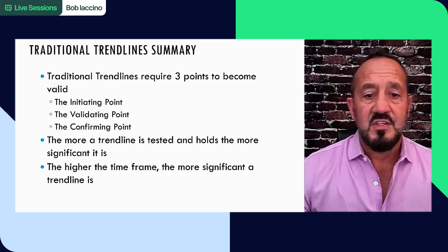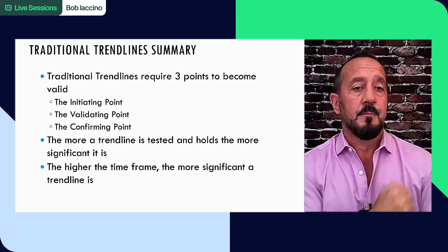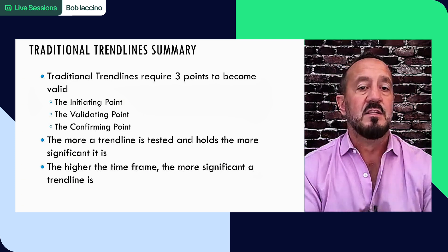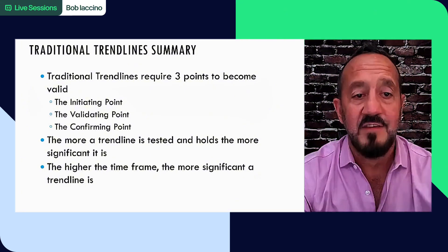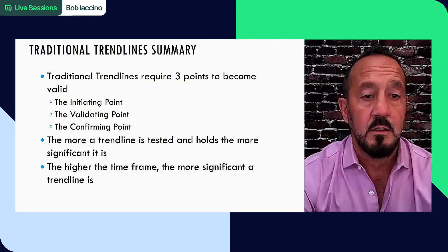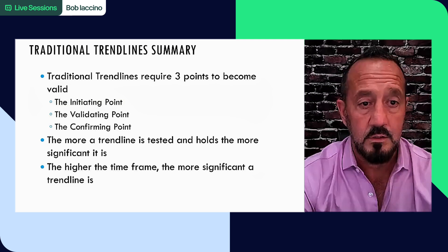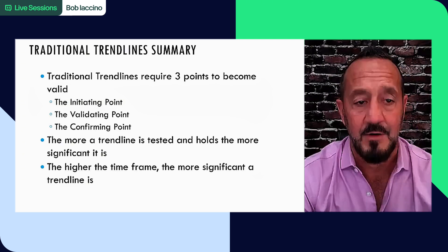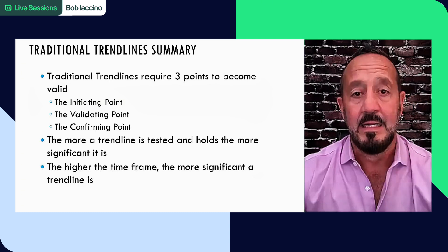Here's the summary. Traditional trend lines require three points to become valid: an initiating point, the validating point, and the confirming point. The more a trend line is tested and holds, the more significant it is, and the higher the time frame, the more significant a trend line is.